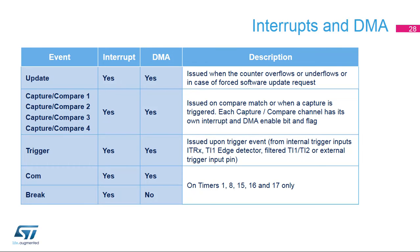Most events can generate either an interrupt or a DMA request, and even both simultaneously. The update event, issued when the counter overflows or underflows, is mainly used to refresh the timer's runtime settings at the beginning of the PWM period. The repetition counter allows skipping some PWM periods to decrease interrupts or DMA requests at high PWM frequency. Each of the four capture and compare events has its own interrupt and DMA. A trigger event on TRGI input can also trigger an interrupt or DMA request. Additional interrupt and DMA sources include commutation and break events on timers 1, 8, 15, 16, and 17.